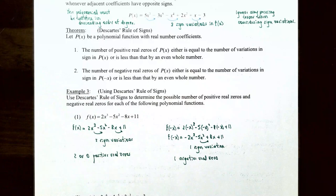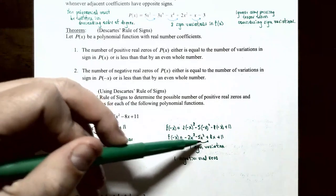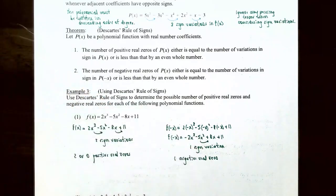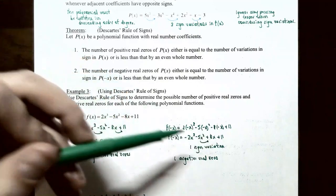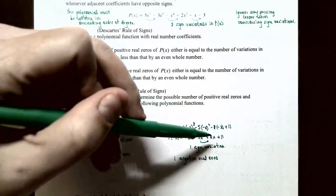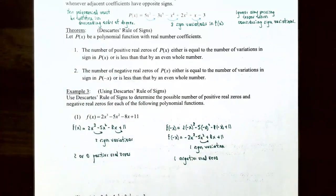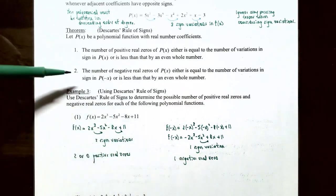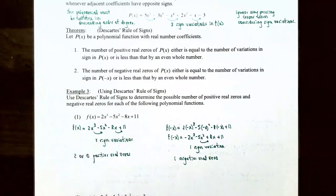Now let's look for sign variations in f of negative x. From negative 2x cubed to negative 5x squared — no sign change. From negative 5x squared to positive 8x — that's a sign variation. From 8x to 11 — positive to positive, no variation. There was only one sign variation, which means the polynomial function f of x will have exactly one negative real zero.